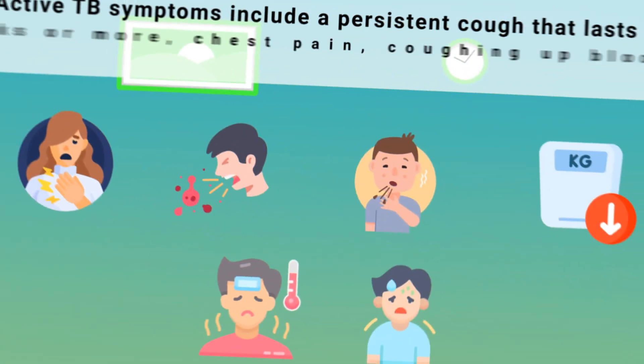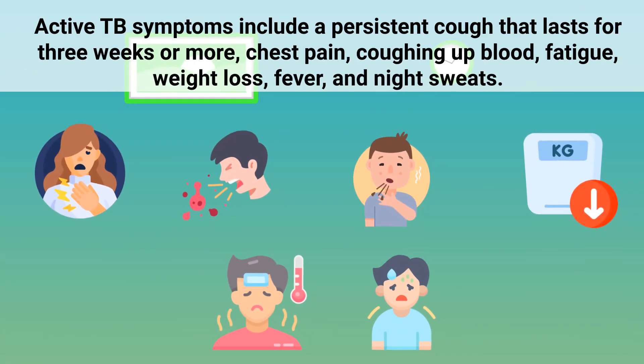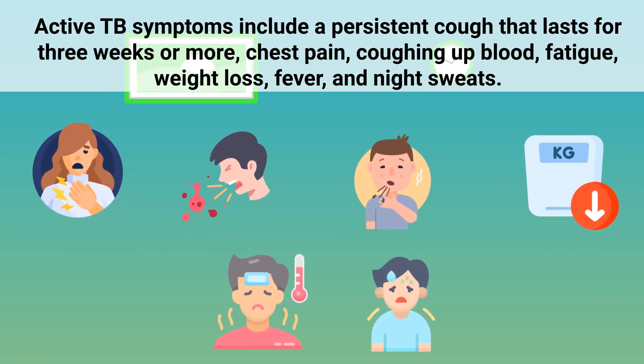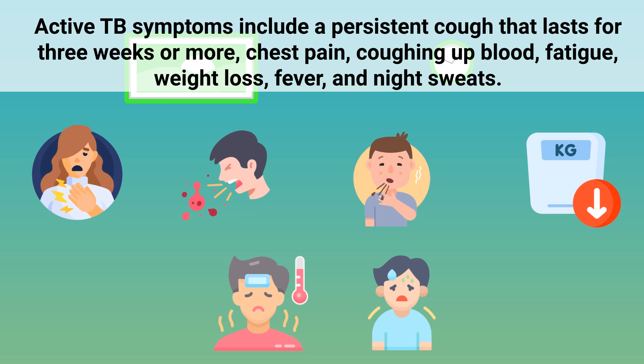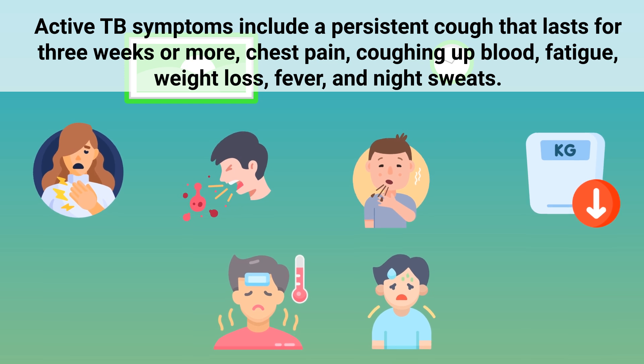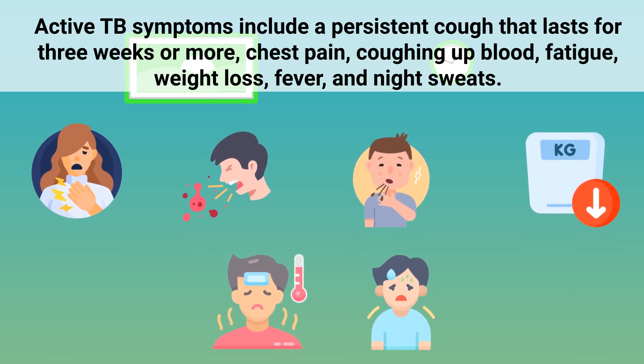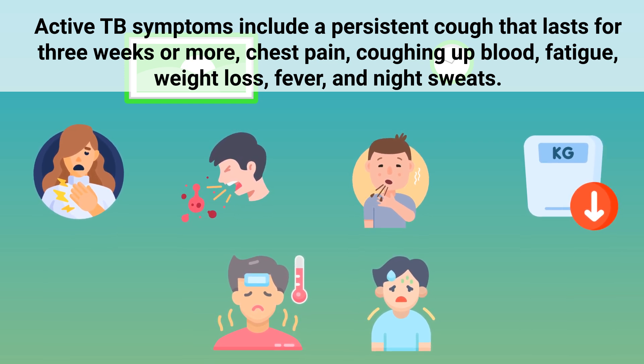Active TB symptoms include a persistent cough that lasts for three weeks or more, chest pain, coughing up blood, fatigue, weight loss, fever, and night sweats.